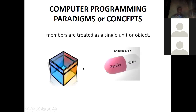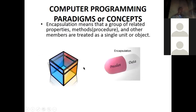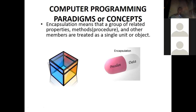Polymorphism means we can change an object or use an object to do different things. Visual Basic is an object-oriented language. Encapsulation means a group of related properties, methods, and other members are treated as a single unit or object. Once we have objects in programming, many methods are put together into one container — give it a name, and you can access the properties and methods of the objects inside.